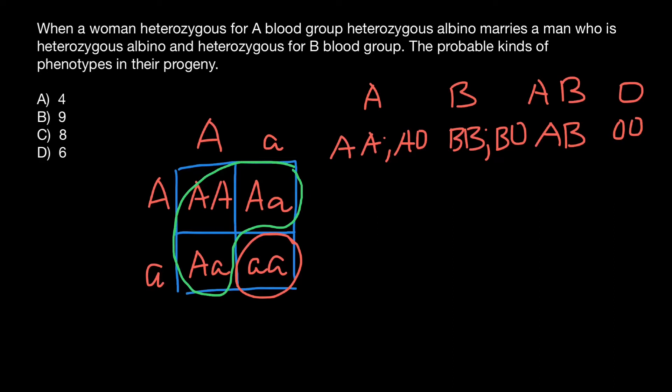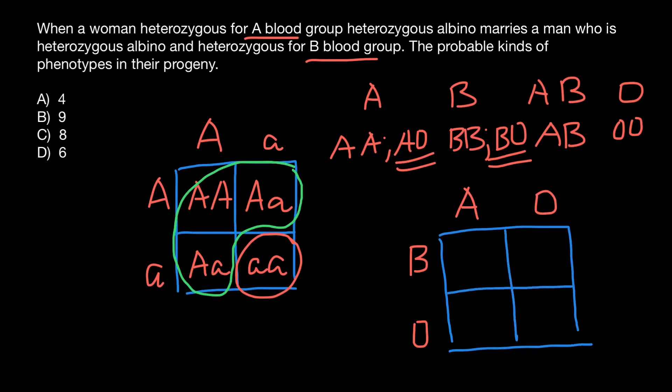We are told that woman belongs to the A blood group and is heterozygous. That means that her genotype is AO. As for the man, we know that he belongs to blood group B and is also heterozygous. That means that his genotype is BO. So woman genotype AO and man genotype is BO. And again, we build a simple Punnett square.